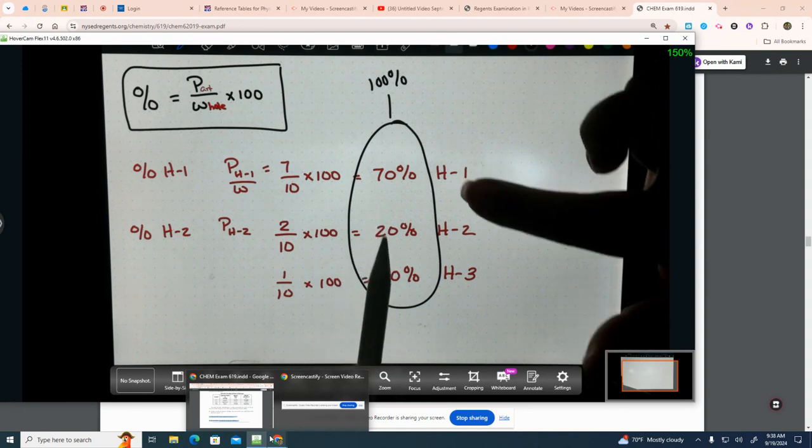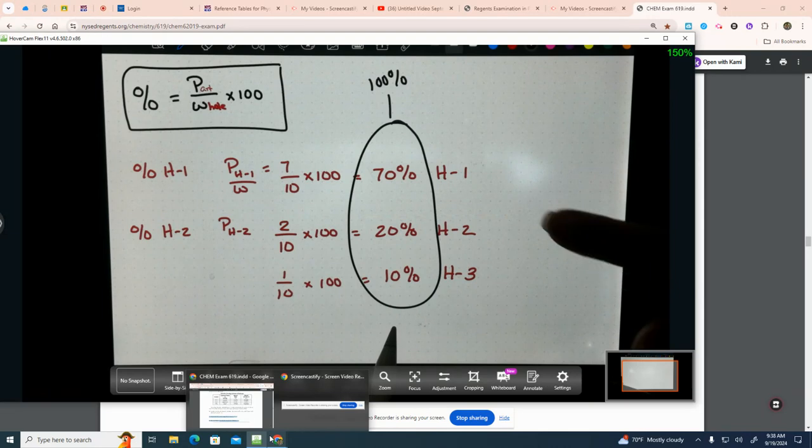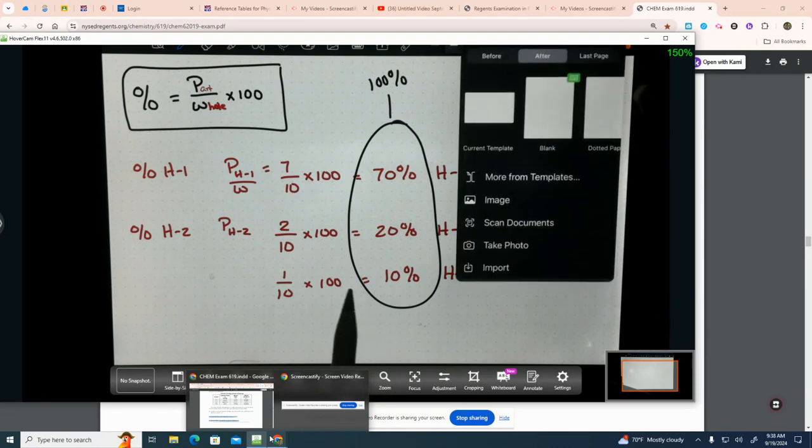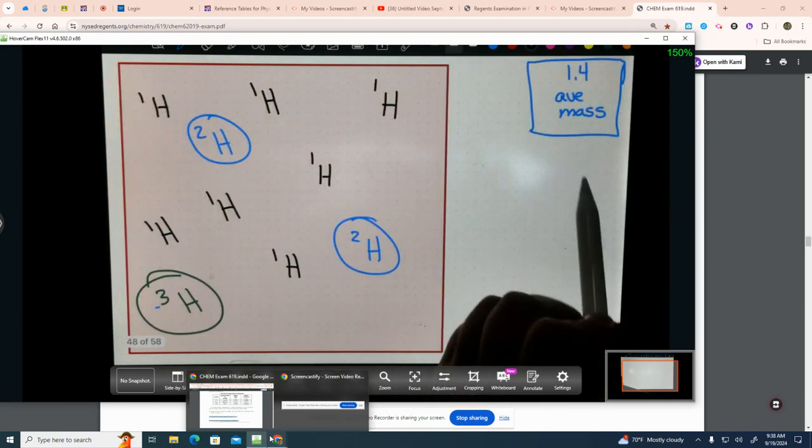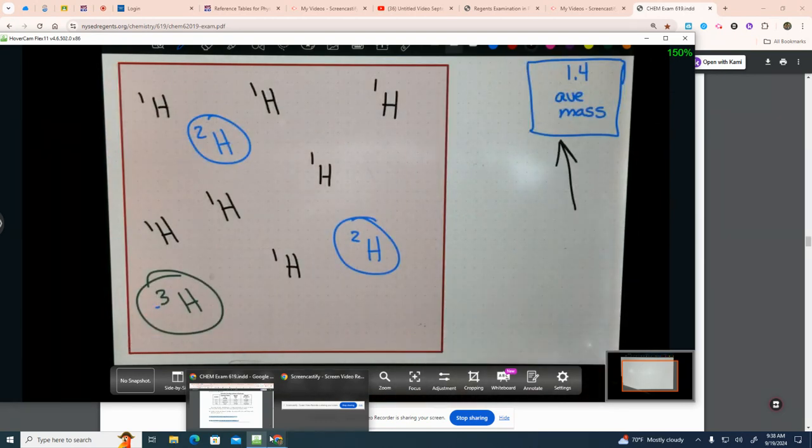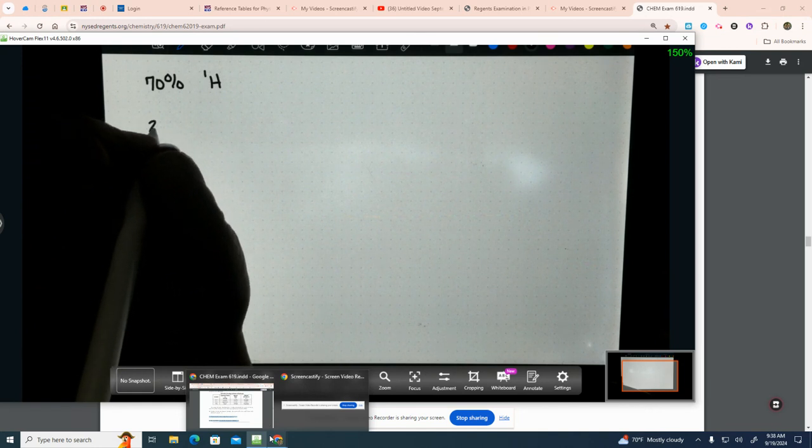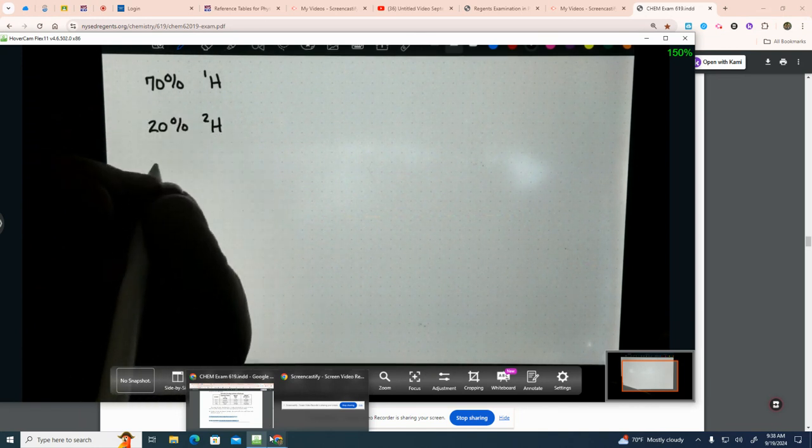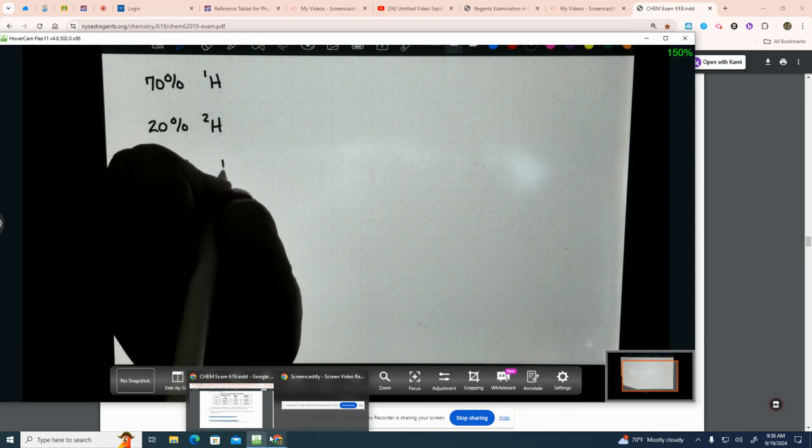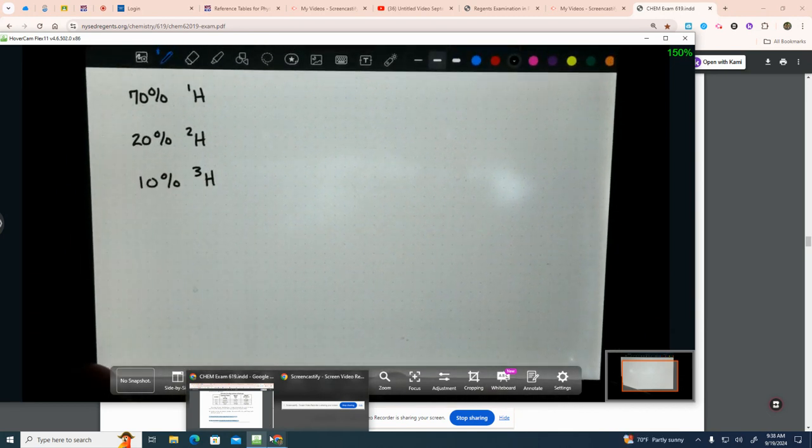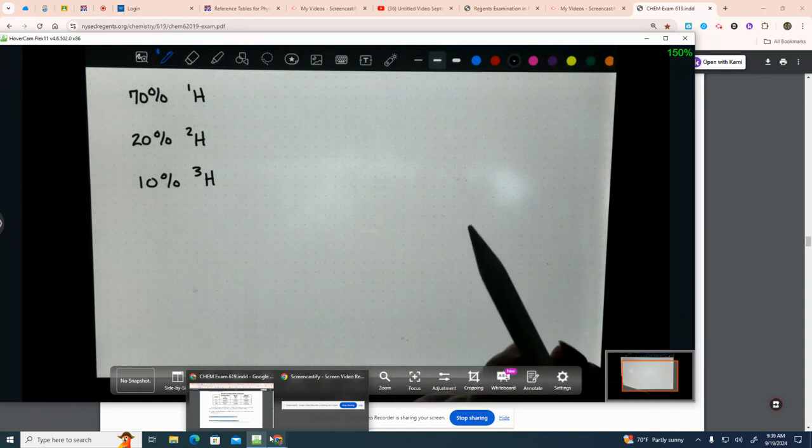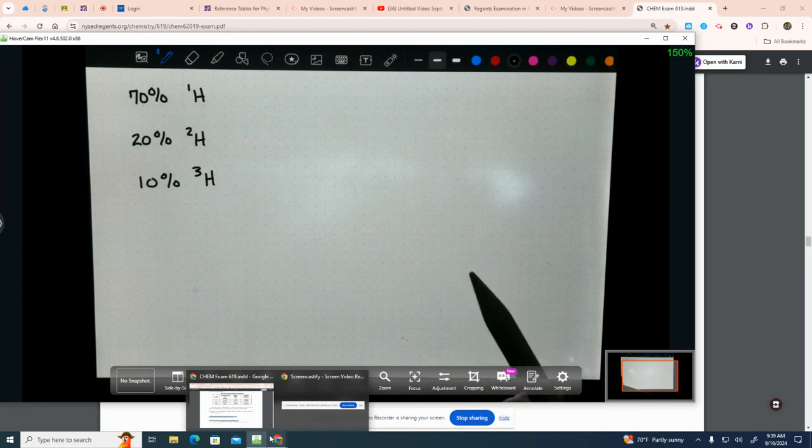We're going to use these percent abundancies to calculate the average isotopic mass and see do we get the same as what we got when we did it the old-fashioned way. So we had 70% of H-1. We had 20% of H-2. And we had 10% of H-3. Here's how you do it. This is not a formula that is given to you on your reference tables, but it is something that is asked on every single Regents exam.